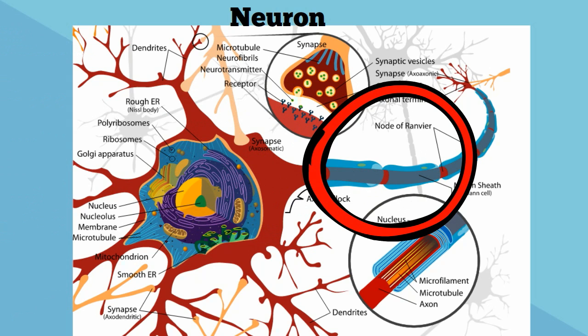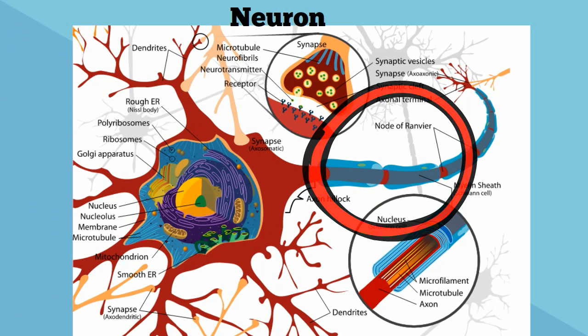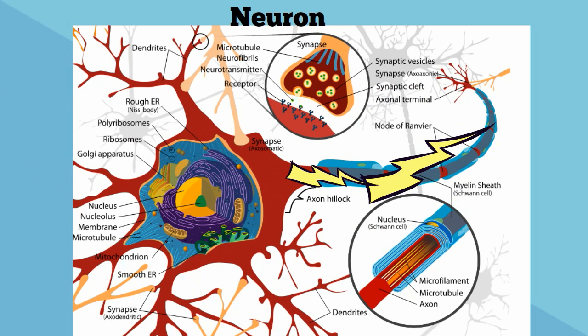Next, a neuron has an axon. The nerve signal passes down the axon.